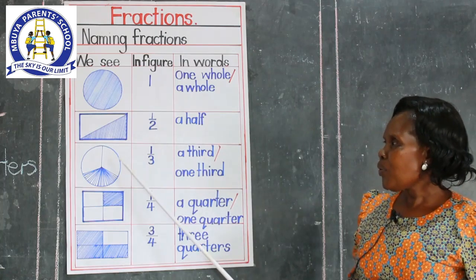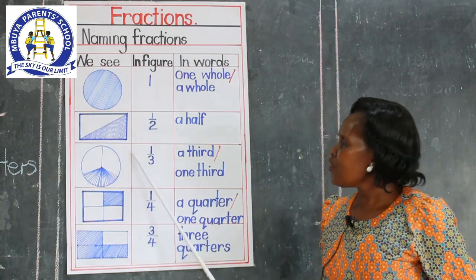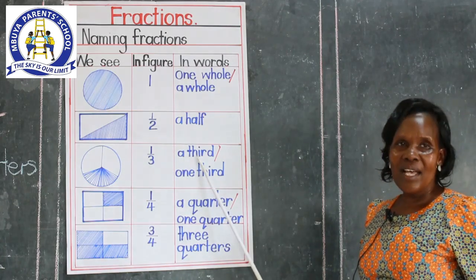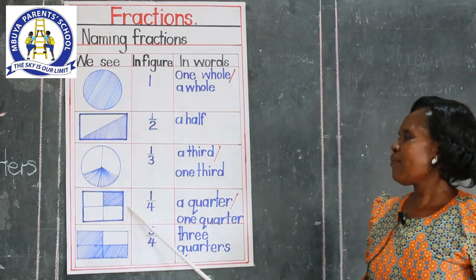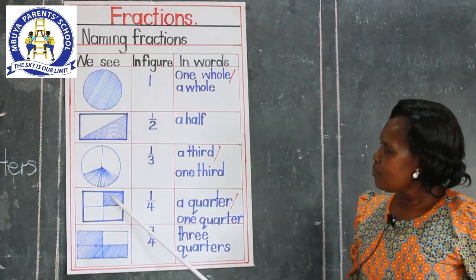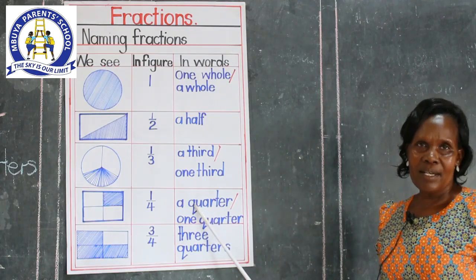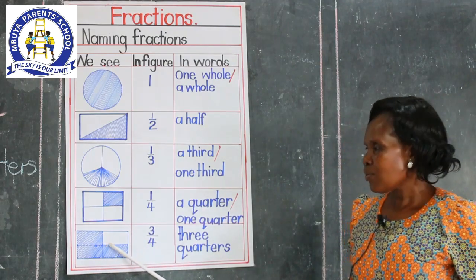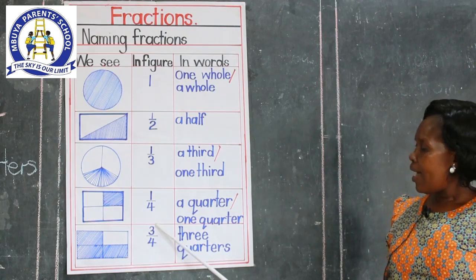You remember I divided an orange into three equal parts — each part is one out of three. In words we say a third, or one third. When we come to the square, I cut it in four. Each part — like this shaded part — we call it one out of four in figures, and a quarter in words. This rectangle was also cut into equal parts, and the shaded part is one out of four in figures, which we say in words as a quarter.